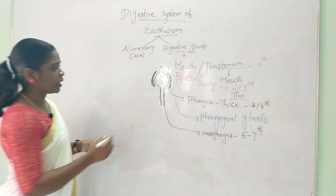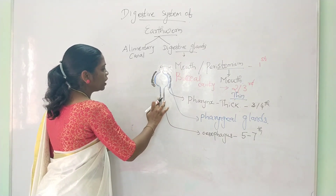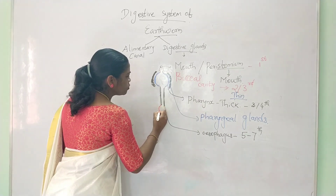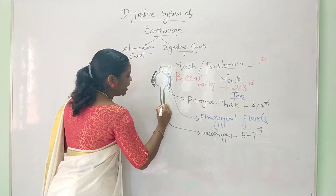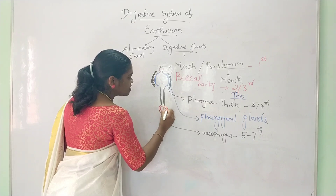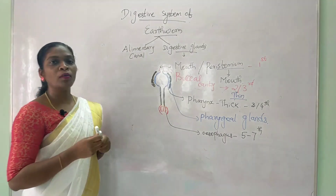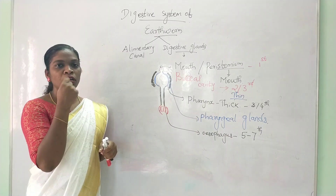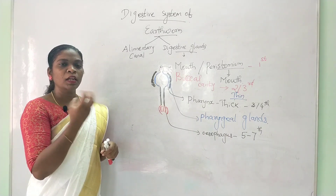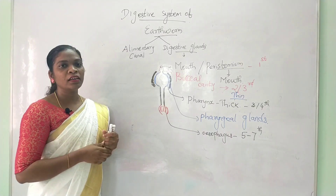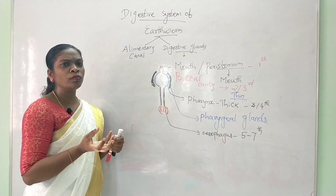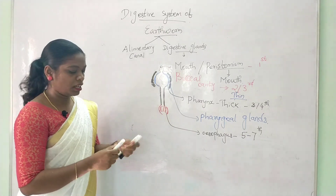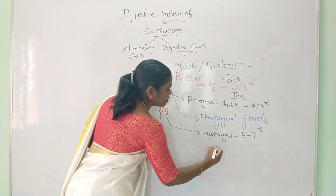The esophagus is present in segments 5 to 8. Within this segment region there is also a structure called the Gizzard. The Gizzard has Chitinous structures. Earthworms lack teeth to grind food, so the Gizzard is a specialized modified structure to grind and digest food.